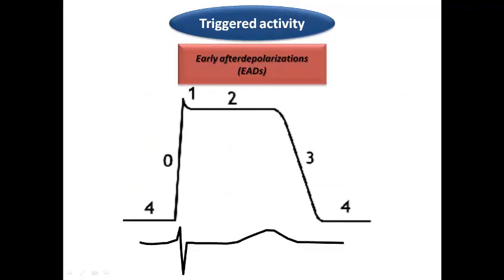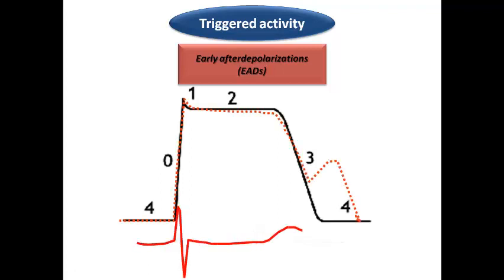Now dealing with triggered activity — we consider the action potential of ventricular or atrial muscle fibers, which shows phase 0 representing depolarization and approximately 4 phases representing repolarization. The problem occurs with certain types of afterdepolarization — a potential that occurs inside the action potential, usually at the end of repolarization. An afterdepolarization occurring during repolarization leads to prolongation of repolarization, mostly reflected as prolongation of the QT interval — this is called early afterdepolarization.